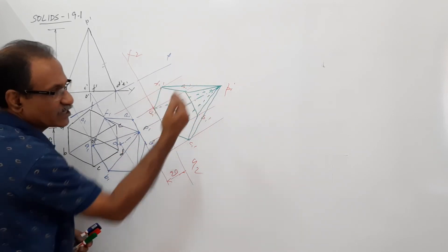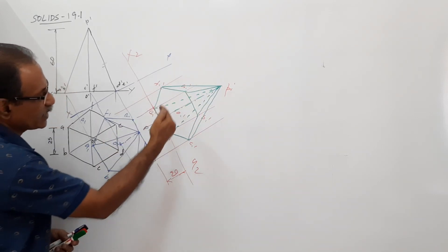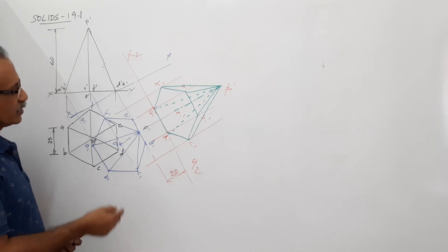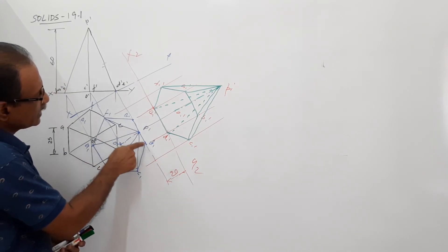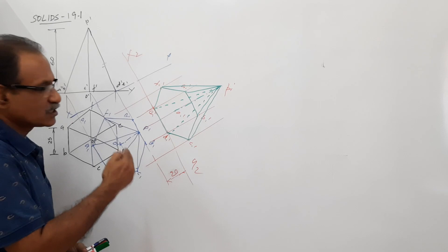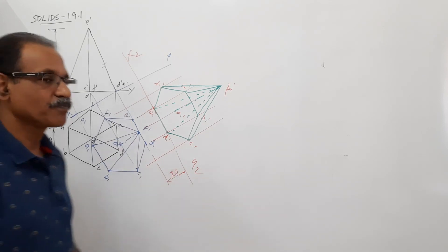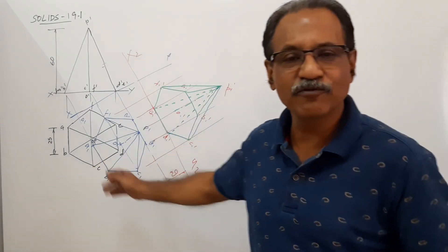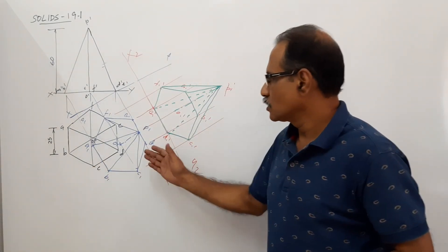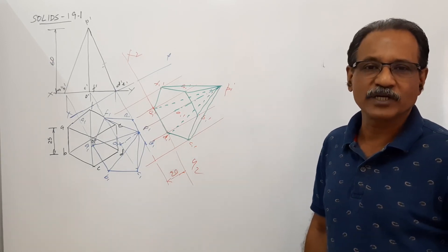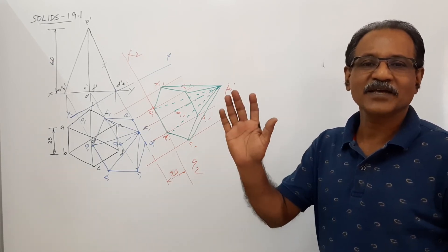Plan XY elevation, plan XY elevation. The base is fully visible. The triangular face DEP is parallel to VP and 20mm in front of you. This will hardly take 15 minutes. Drawing this will hardly take 15 minutes whereas the redrawing will take 35 to 40 minutes. Ok, thank you.